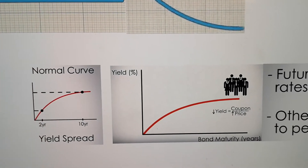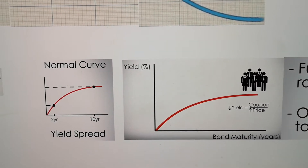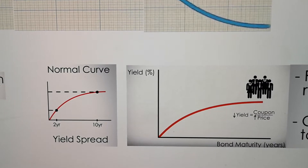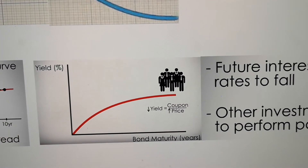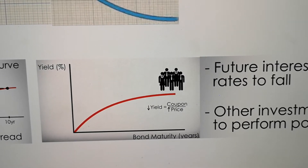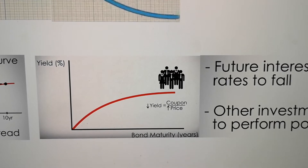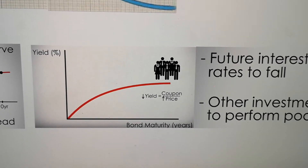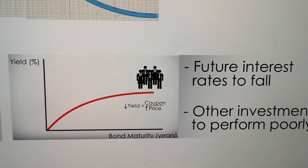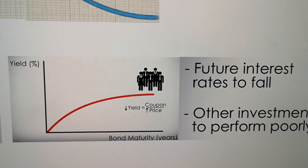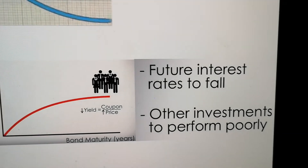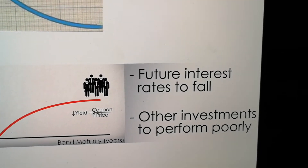So when you say the Yield spread, that's the difference between the 10-year bond versus the 2-year bond. The percentage of Yield, based on the bond's maturities — usually the longer we're holding, there will be a liquidity premium, which means it should give more interest and higher Yield. But there are also cases where the Yield is going down, meaning the future interest rate may fall or other investments may not perform as well as expected.